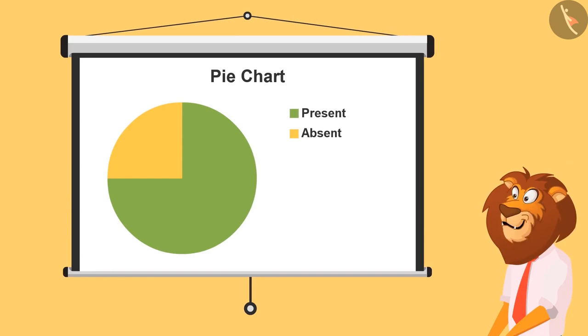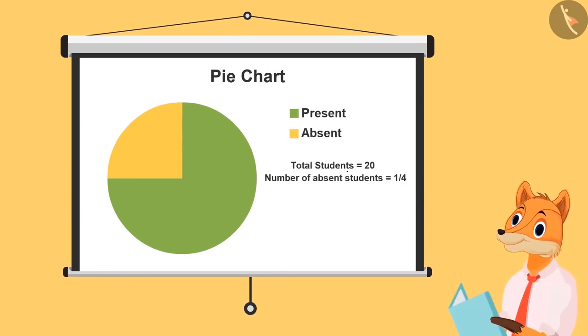These are the present kids and these are the absent kids. Here we'll find out one-fourth of 20. Because absent kids are one-fourth of the total chart. So, one-fourth of 20 will be, half of 20 is 10 and half of 10 is 5.